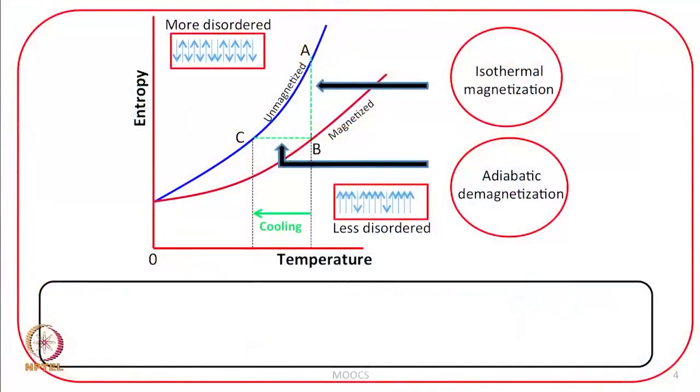Let us discuss what the adiabatic demagnetization process is. Every substance has a positive entropy. The entropy depends upon temperature — if temperature is increased, the extent of disorder will also increase, so when temperature increases the entropy also increases. This is a plot of entropy versus temperature: with increase in temperature, entropy increases in a non-linear fashion.